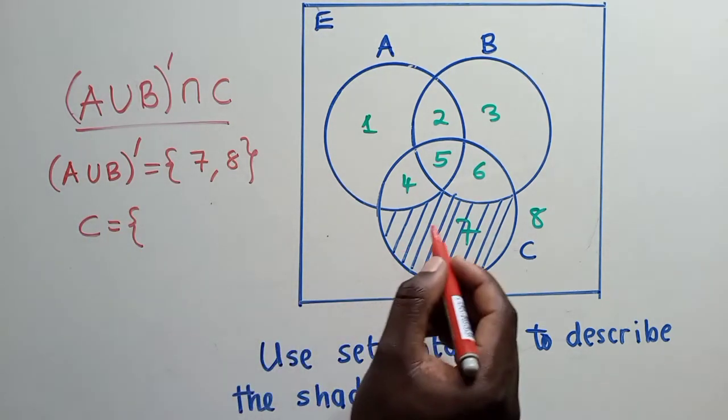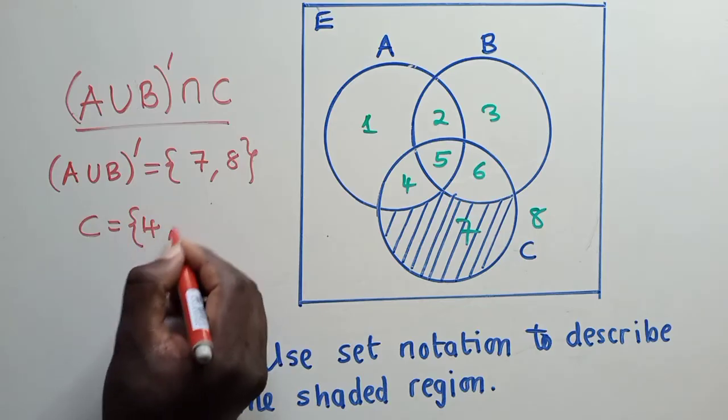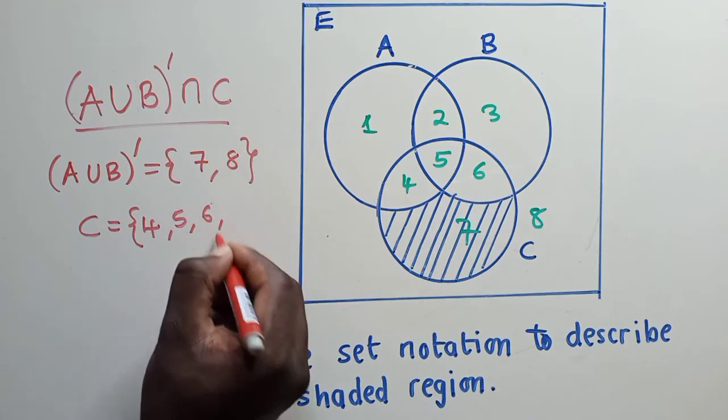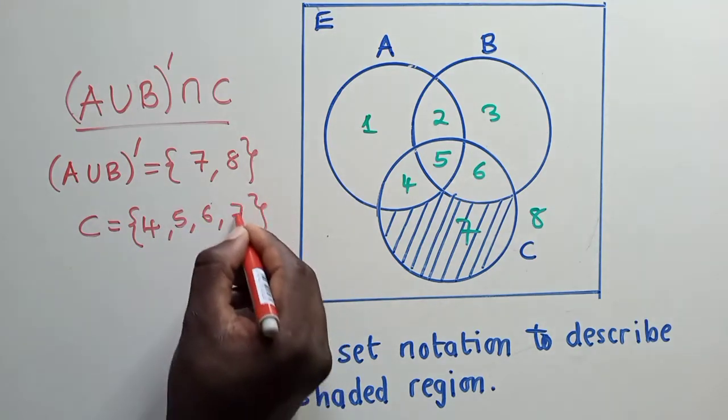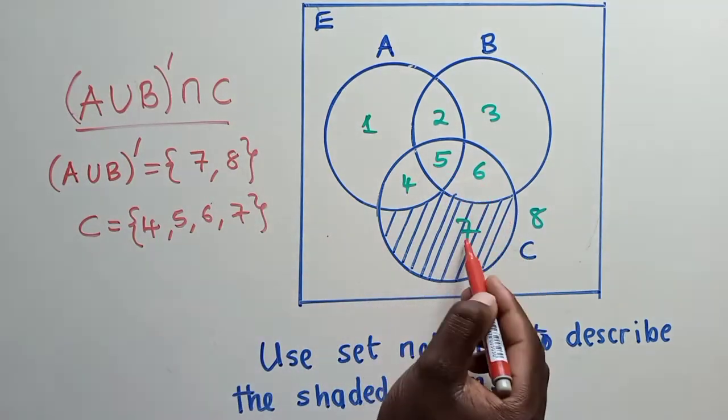What is C? C is 4, 5, 6, 7. So C has got 4, 5, 6, and 7. We're talking about this C.